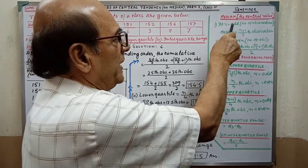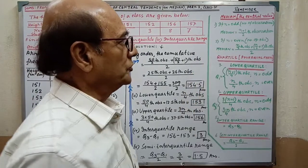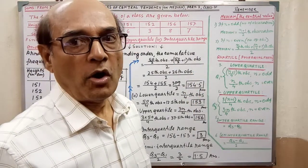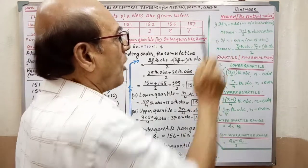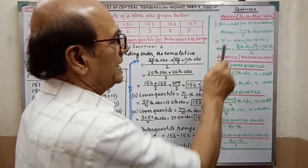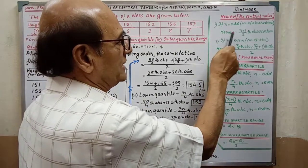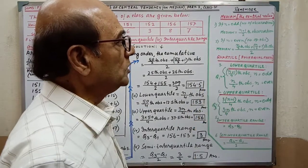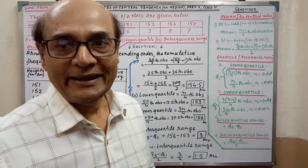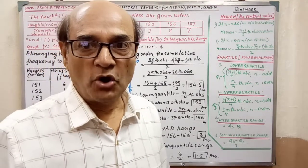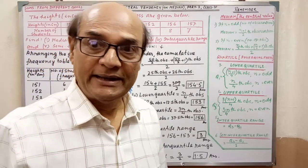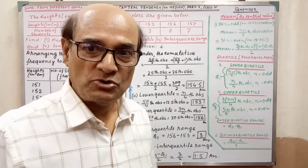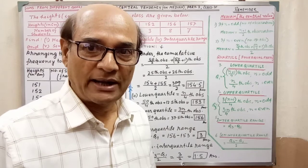If n is odd — that means if the number of observations is an odd number — then the median equals the (n+1)/2 th observation. That is not the answer itself; you have to count to that observation, and that variable will be the median.